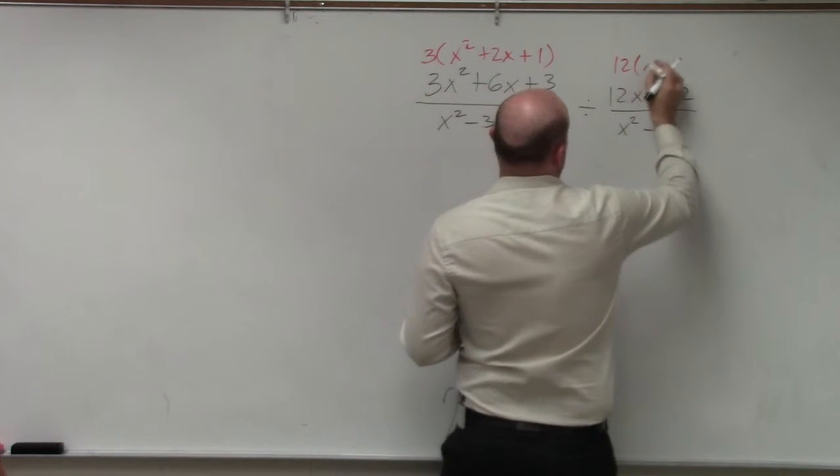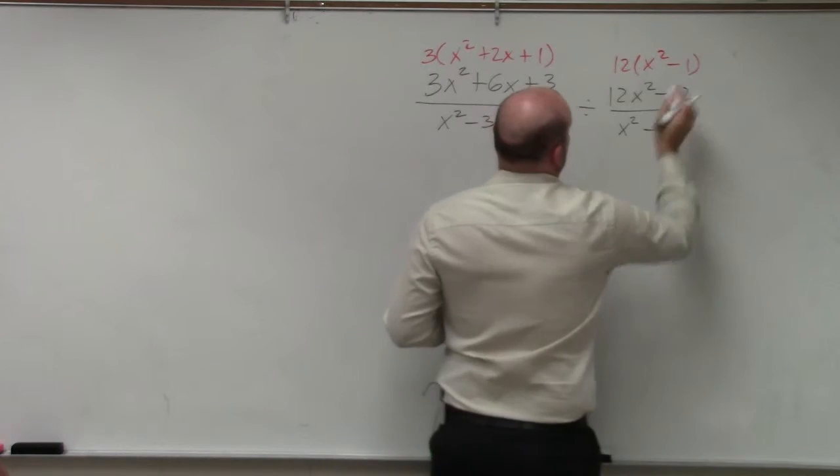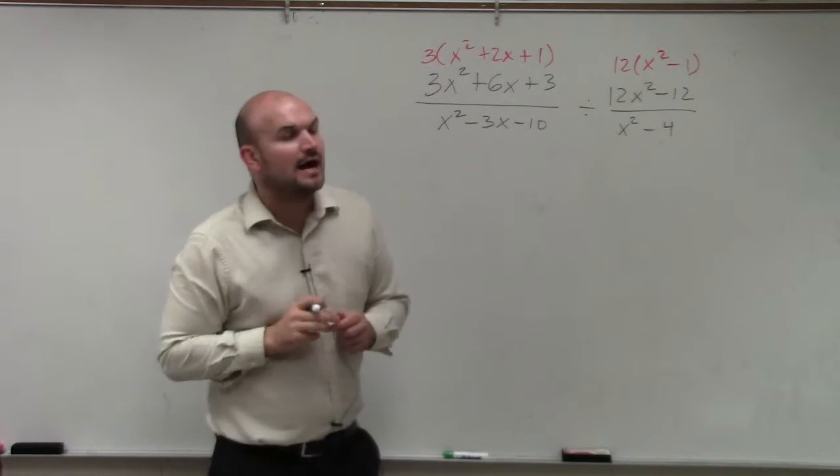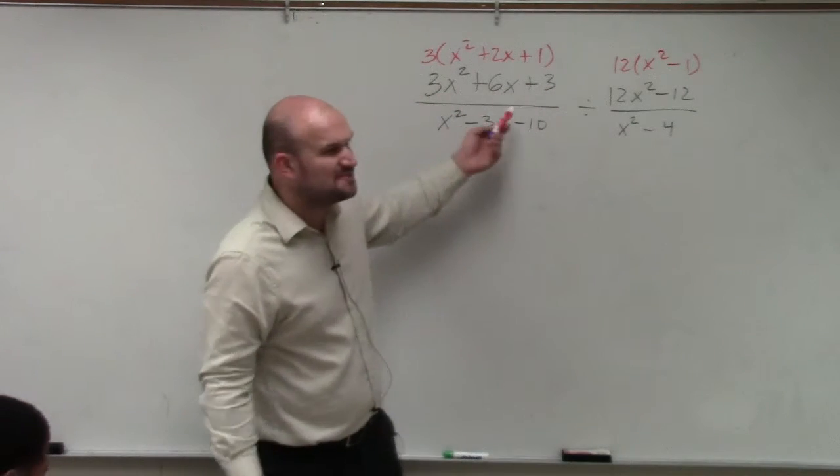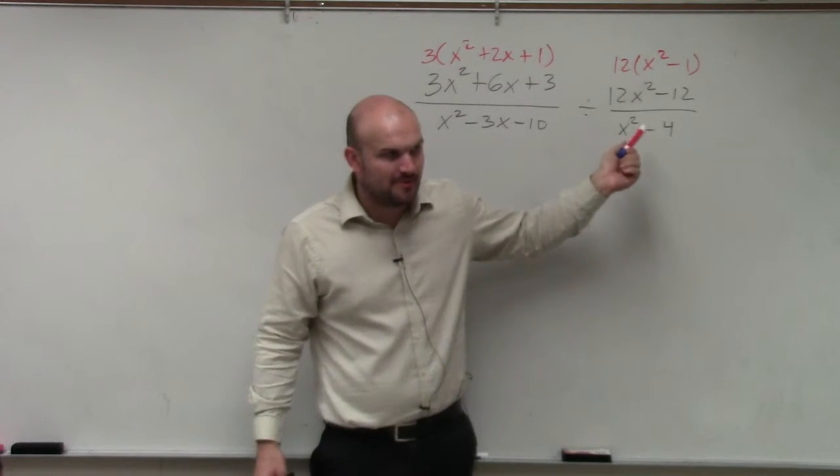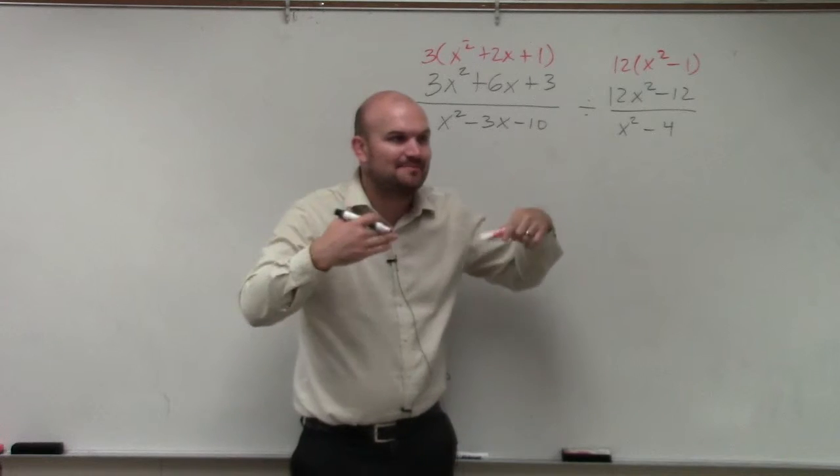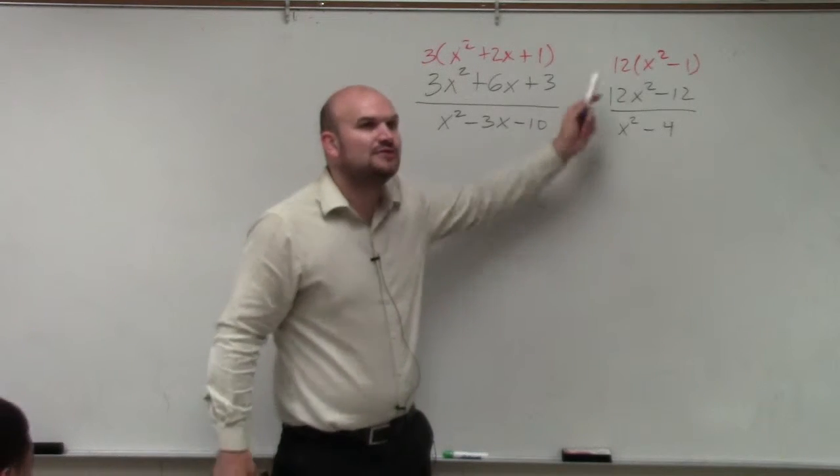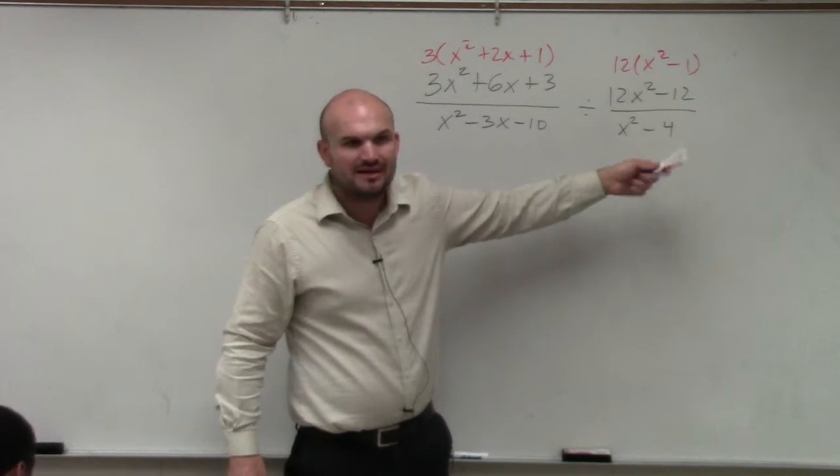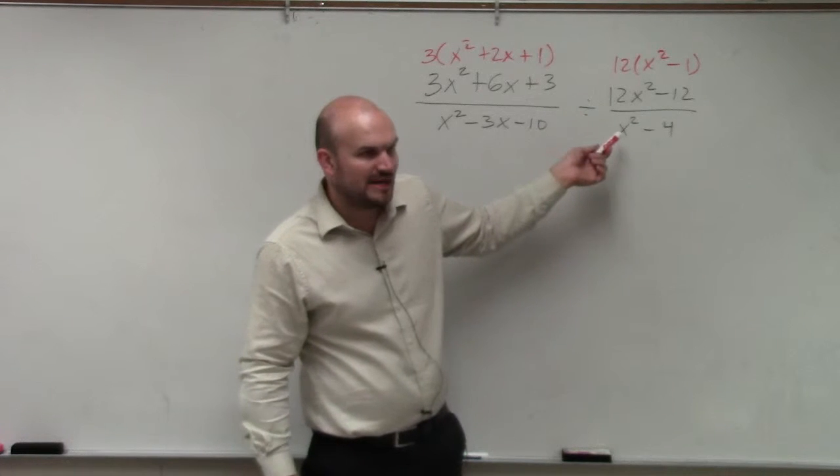And then I'll factor out a 12. Now, when we are dividing, this is really the exact same thing what I did last example. You have a fraction divided by another fraction. So in reality, it's the same thing as multiplying by the reciprocal of your divisor. It's just written in a different formation.